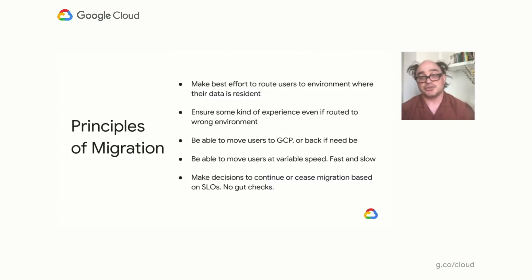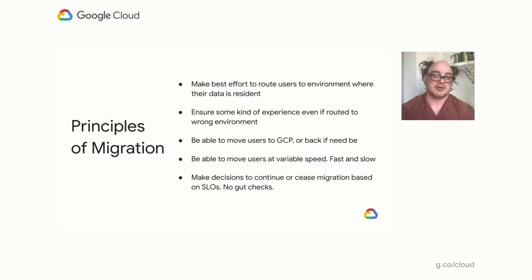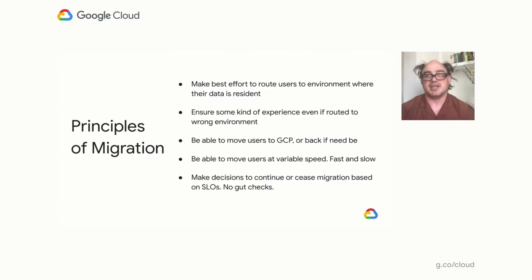We want to be able to move users to GCP, but if things aren't going well, we need to be able to move them back. We also need to be able to move at variable speed: if things are going great, we should move users more quickly; if not, trickle them in and get our sea legs. Lastly, when making decisions about fast, slow, forward, or backwards, we don't want to be making gut-check decisions. We want to look at a chart and say we're meeting our SLOs, so we needed to develop more SLOs and have a better handle on them before doing this appropriately.